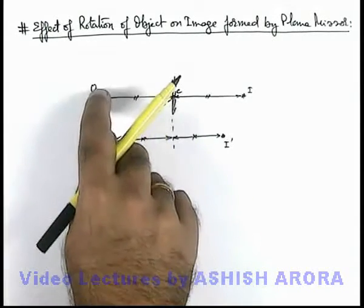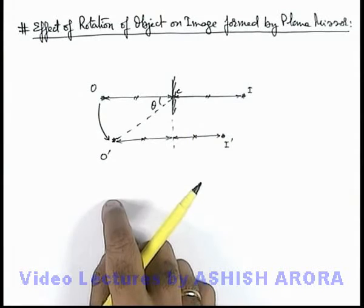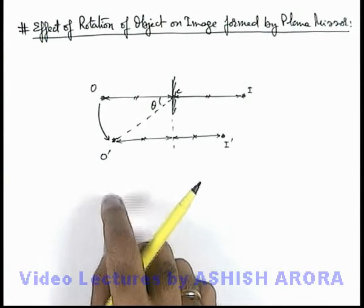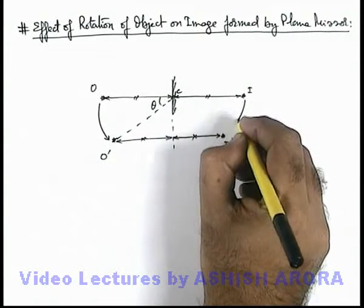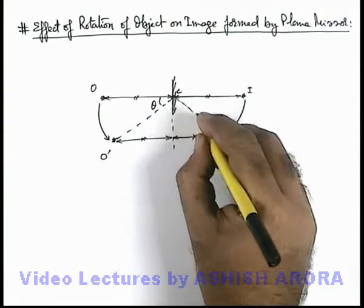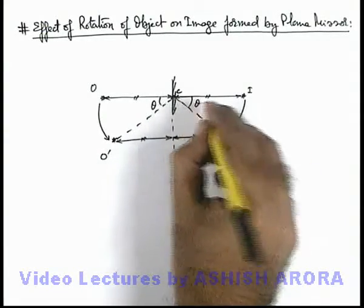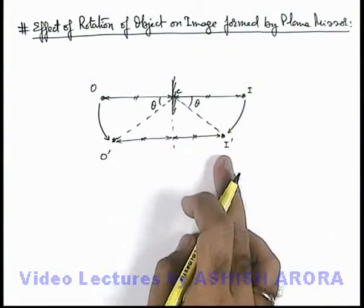Now here we can see as object is rotated in anticlockwise manner about point C, the image will rotate by the same angle because in this situation this angle would be same, and image will rotate in clockwise manner.